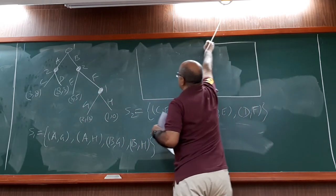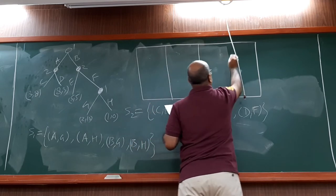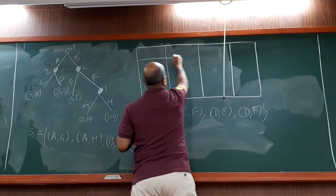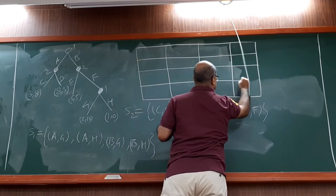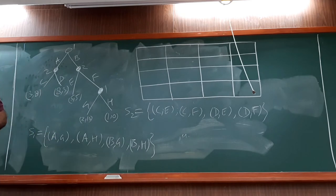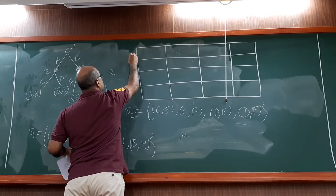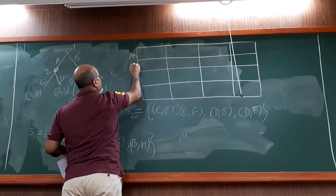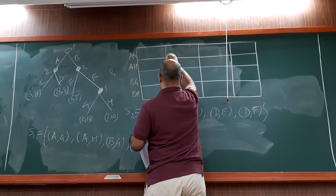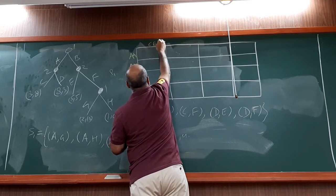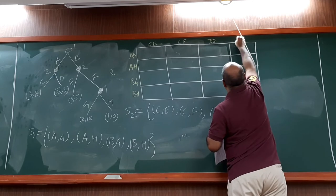So how many rows do I need? This is player 1 as usual. The rows will be A, G, A, H, B, G, B, H. And this will be player 2 - the columns will be C, E, C, F, D, E, and D, F.